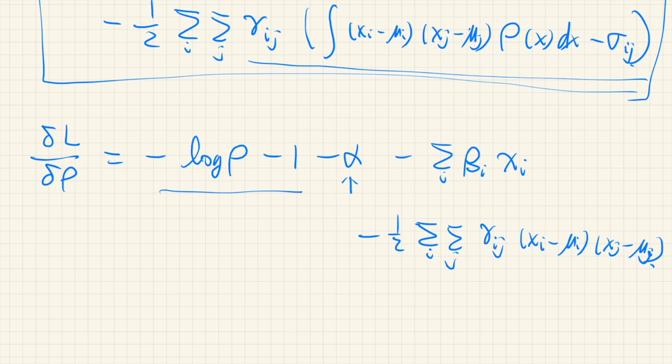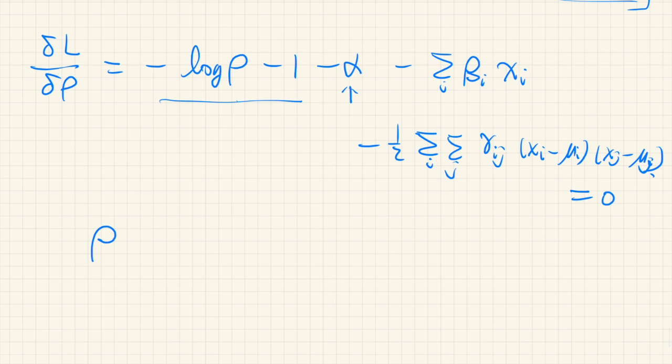So this is the functional derivative of the Lagrangian. Now, let's put this equal to 0 and solve for ρ. Then we have exponential of negative 1, negative α, and all of this.